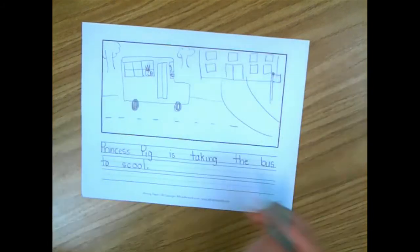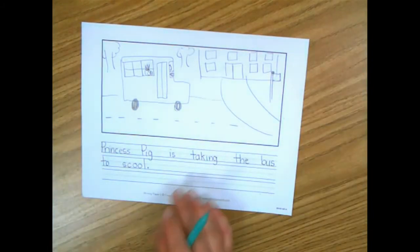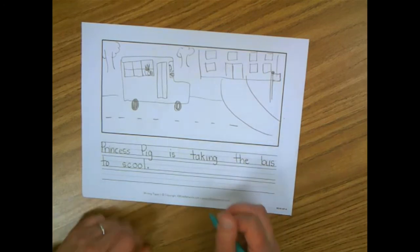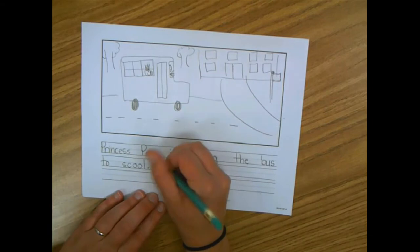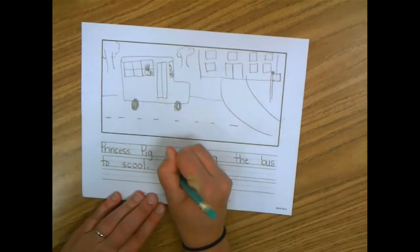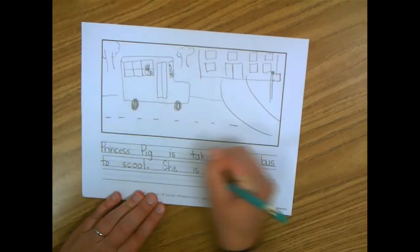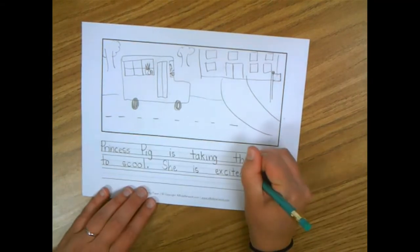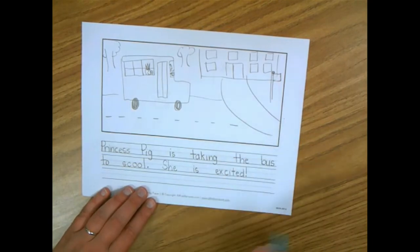Okay, now let me add some details to my words. I said Princess Pig is taking the bus to school. I think I want to tell my readers how she feels about that. She is excited. So I'm going to add another sentence. She is excited. And you know what? I'm going to use some special punctuation. Exclamation mark.